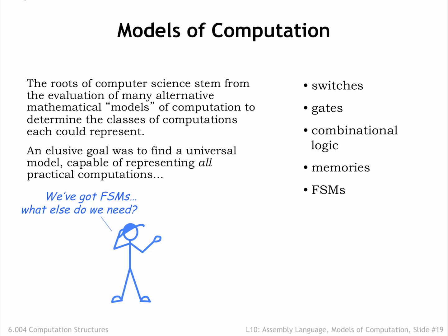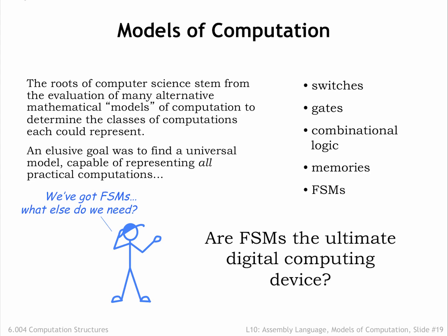One candidate model might be finite state machines, FSMs, which can be built using sequential logic. Using Boolean logic and state transition diagrams, we can reason about how an FSM will operate on any given input, predicting the output with 100% certainty. Are FSMs the universal digital computing device? In other words, can we come up with FSM implementations that implement all computations that can be solved by any digital device?